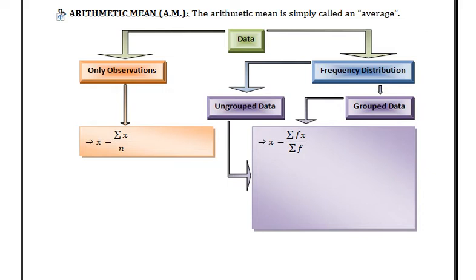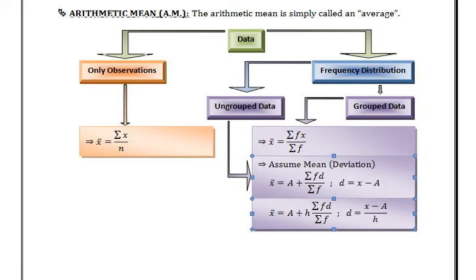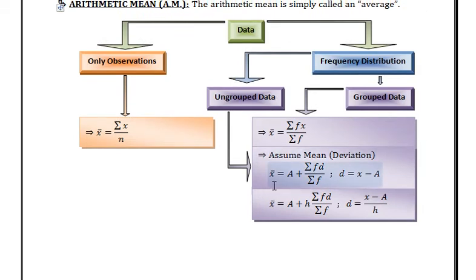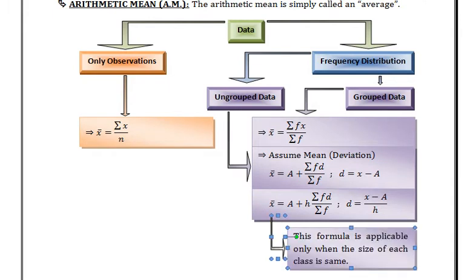We can also find mean using deviation, or using assumed mean. The first formula is x-bar equals a plus summation fd upon summation f, where deviation is x minus a. The second formula is x-bar equals a plus h times summation fd upon summation f, where deviation is x minus a upon h. The second formula is applicable only when the size of each class is the same — that is, when we can find a common difference h.